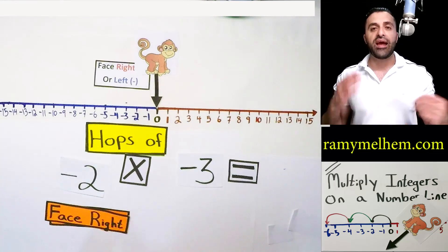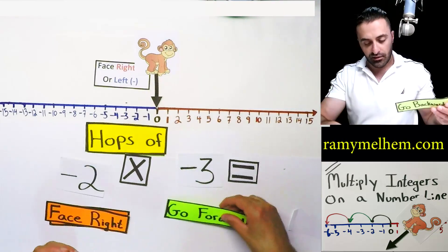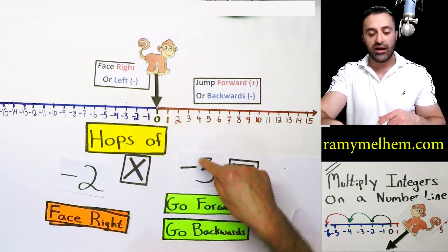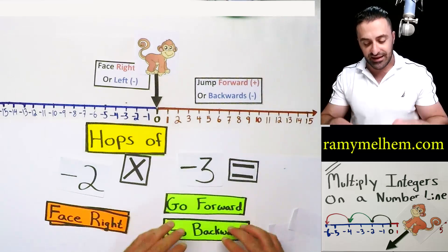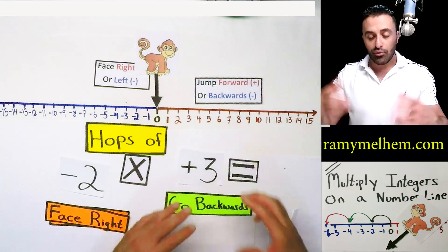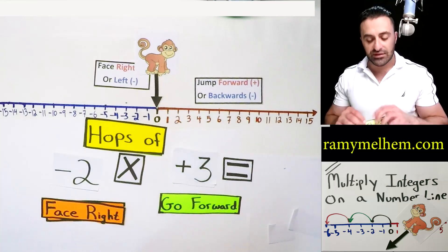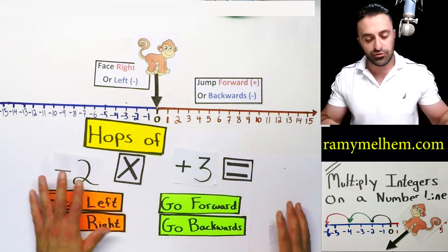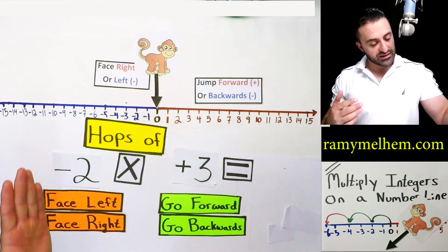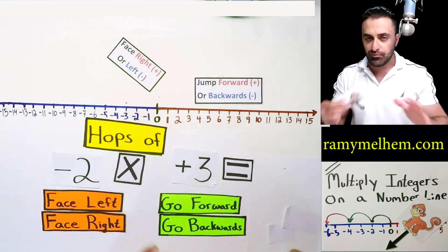The second symbol tells us which way to jump — jump forward or jump backwards. You've got to jump forward if it's a positive and jump backwards if it's a negative. In this case it's a negative, so we would have to jump backwards. But if it was a positive three, then we would have to jump forwards. Know the difference there. This tells us the direction to face, and this one tells us the direction to jump.